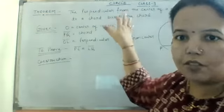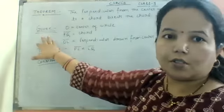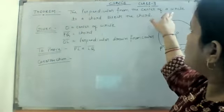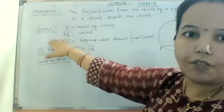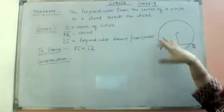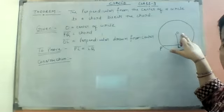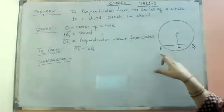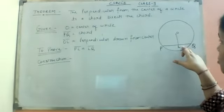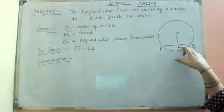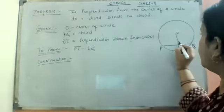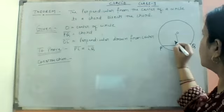First you have to write the theorem, after that you have to write the given statement. Before writing the given statement, we are going to make a diagram. The diagram shows the circle, O is the center of the circle, PQ is the chord, and OL is the perpendicular drawn from the center.